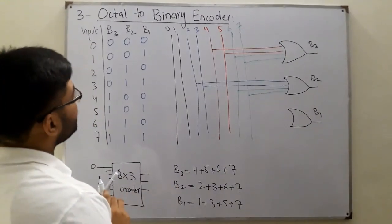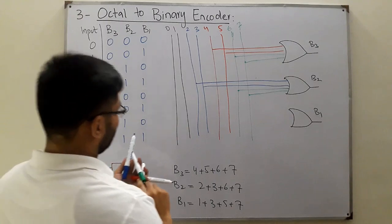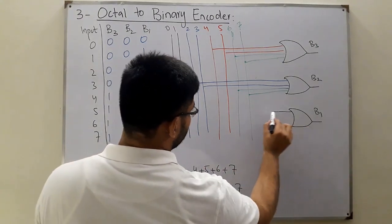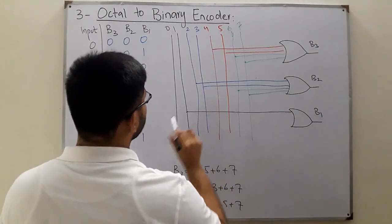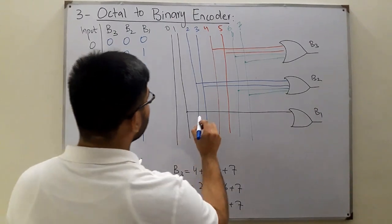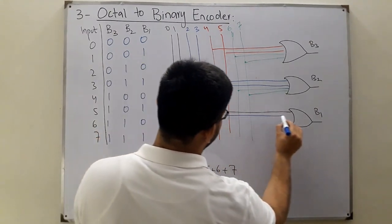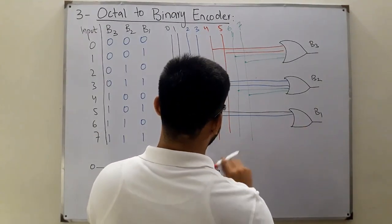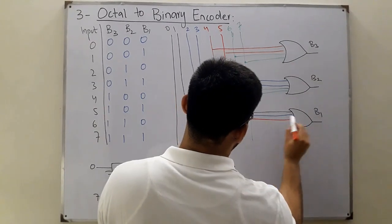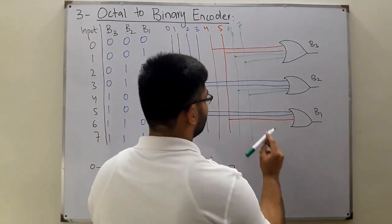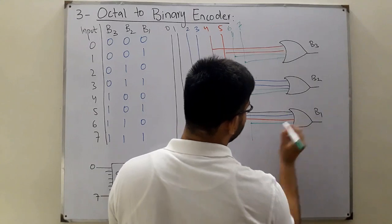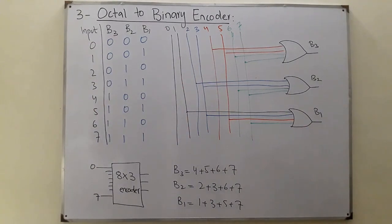And finally b1 is 1, 3, 5, and 7. So 1 is with the black color, 3 with the blue, 5 with the red, and 7 with the green. So b1 got all my four colors. That's about the octal to binary encoder. That's the circuitry which we have inside this box.